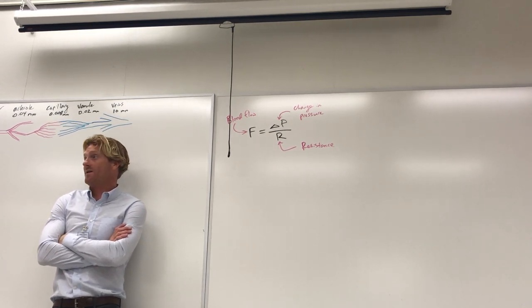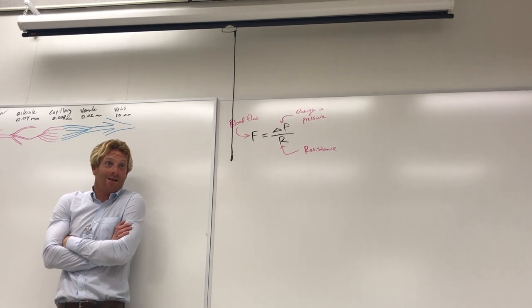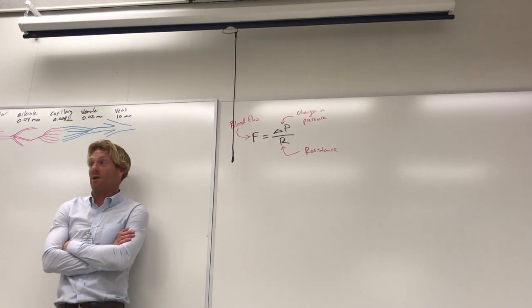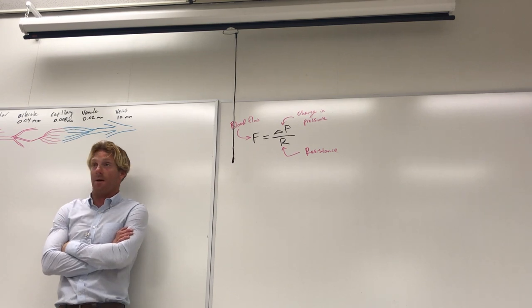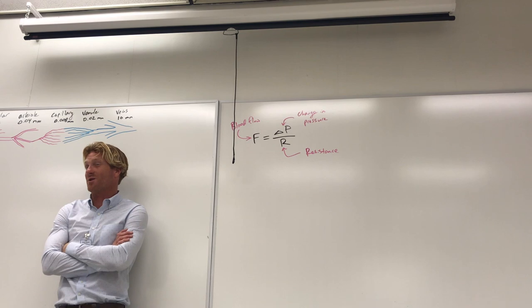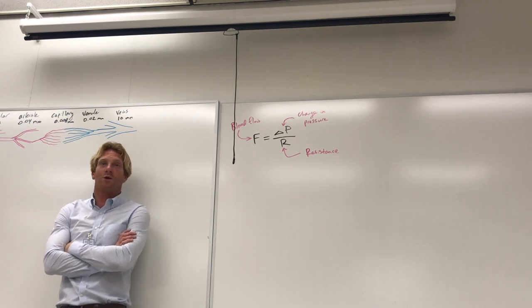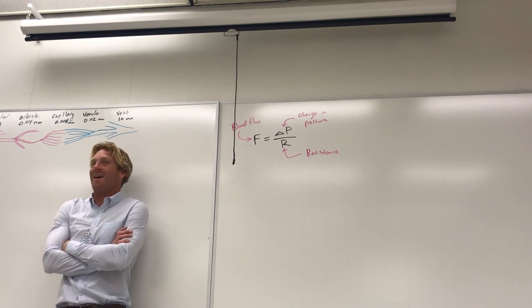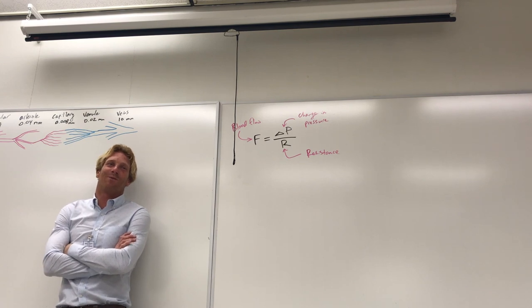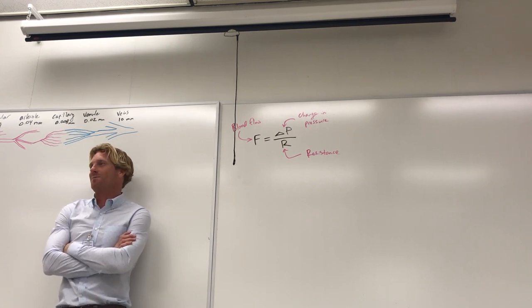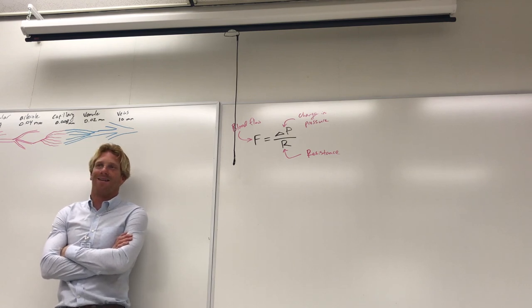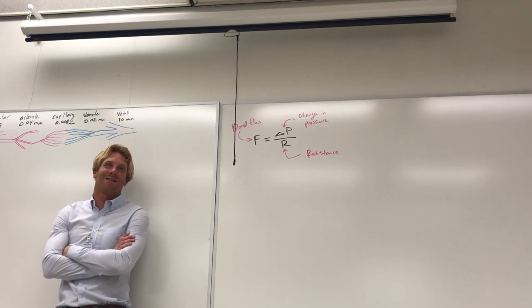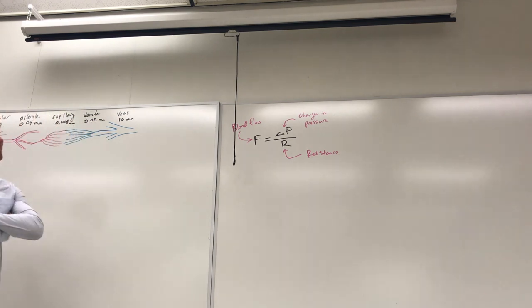Tube length doesn't really become a factor in daily life, but it does as we grow. Kids have shorter vessels, which means lower resistance. That directly affects their blood pressure — a child's blood pressure is typically lower than an adult's. For example, a nine-year-old might have a blood pressure of 90/60, which is normal.